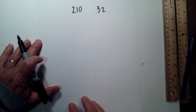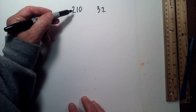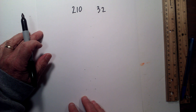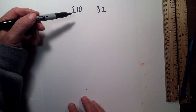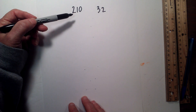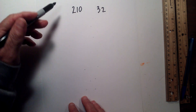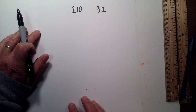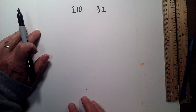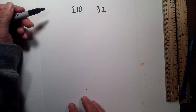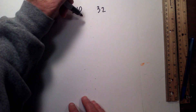In this video we'll find the prime factors of 210 and 32. Prime factorization is finding which prime numbers multiply together to equal the original number. I like to use a factor tree in order to find them. So let's get started.